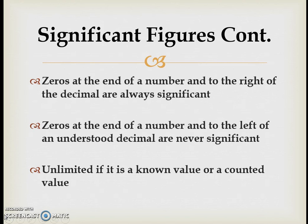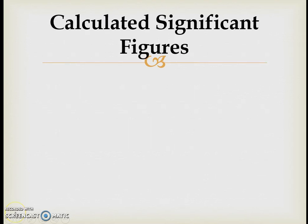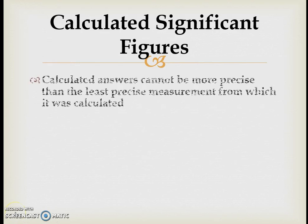Those trailing zeros in a large number like 100,000 are just holding the place of the ones, tens, hundreds, thousands, and ten-thousands places. If you took those zeros away you'd change the value, but they weren't actually measured zeros, so it is just one significant digit. The last rule is that it's unlimited if it's a counted or known value — conversions involving units won't change the number of significant figures.